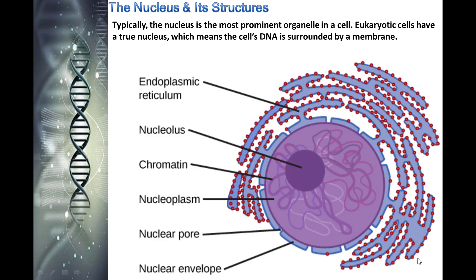The boundary of the nucleus is called the nuclear envelope. It consists of two phospholipid bilayers: an outer membrane and an inner membrane. The nuclear membrane is continuous with the endoplasmic reticulum. Nuclear pores allow substances to enter and exit the nucleus.